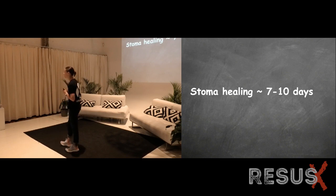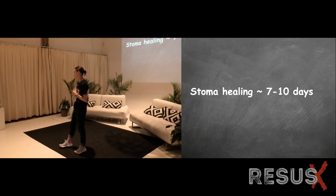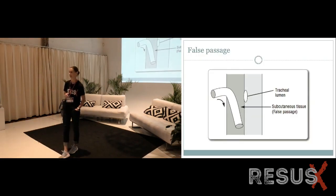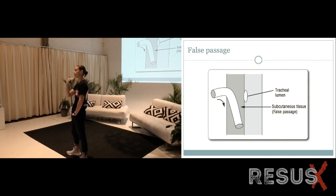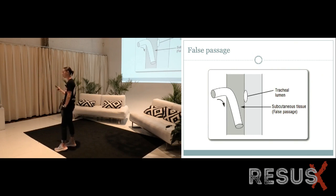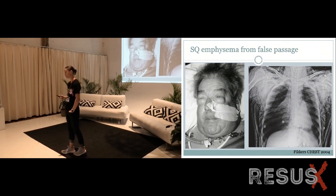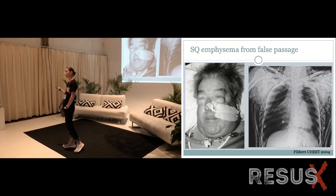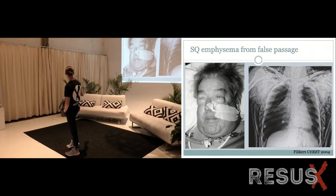Fourth, the date of placement. A stoma is simply a tracheocutaneous fistula, and if it has not yet had time to heal at 7 to 10 days, there is increased risk of a false passage when inserting a new tube. A false passage is when you enter the cutaneous hole but not the trachea, and instead pass into subcutaneous tissue. If you bag someone under positive pressure through a false passage, you get massive sub-Q emphysema. This patient is not morbidly obese — this is all sub-Q emphysema, extending down the thorax, with bilateral tension pneumothoraces. When you encounter resistance with bagging, be very careful, because this would make orotracheal intubation extremely difficult and trach reinsertion nearly impossible.